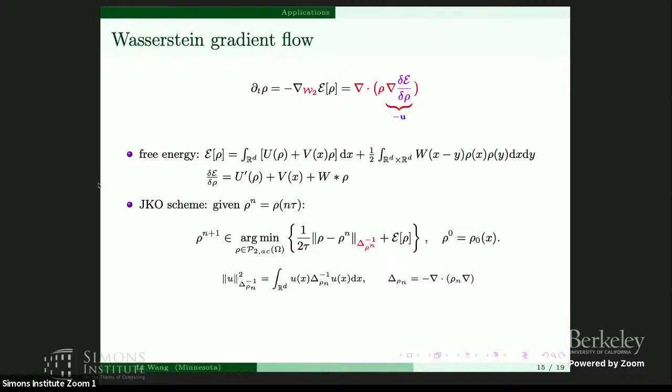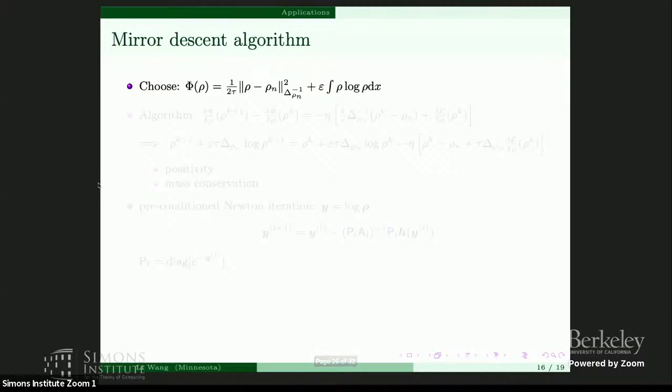We use the H^{-1} norm to approximate the Wasserstein distance. This weighted H^{-1} norm is defined via the weighted Laplacian of rho_n. Now the question boils down to how to solve this minimization problem, and of course we use mirror descent. The whole point is to choose the potential function phi.